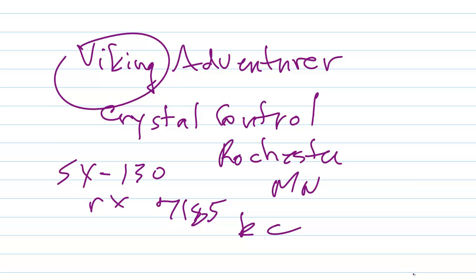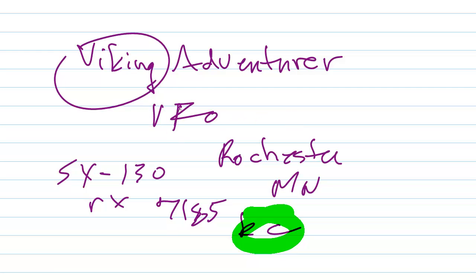Today, we'd more likely call it 7.185 megahertz. Now, I believe in the phone part of the 40 meter band, but back then, the CW part of the novice band went from 7,150 to 7,200 kilocycles. Well, a year later in 1967, I got my general class license, and I was no longer required to use crystal control. I could use a variable frequency oscillator VFO, and I was like a pig in mud. I was so happy.